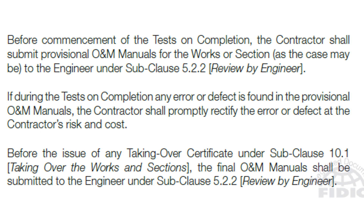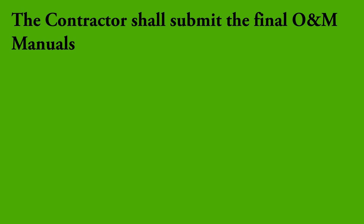There are important points in sub-clause 5.7 to note: if during tests on completion any error or defect is found in the provisional O&M manuals, the contractor shall promptly rectify it at the contractor's risk and cost. Before the issue of any Taking Over Certificate under sub-clause 10.1, the final O&M manuals shall be submitted to the engineer under sub-clause 5.2.2, Review by Engineer. However, it is not stated that a notice of no objection is essential for the final O&M manuals in order to issue the TOC.